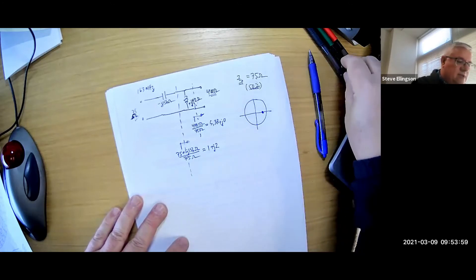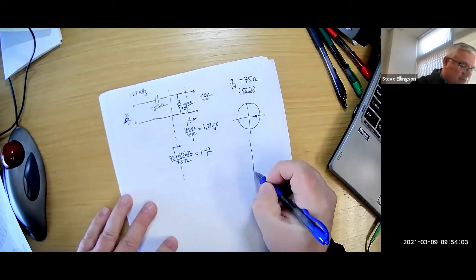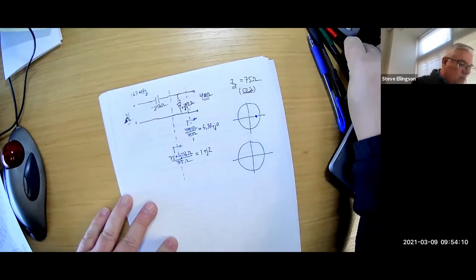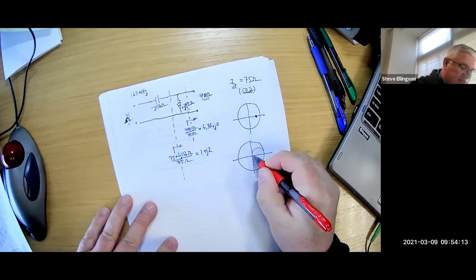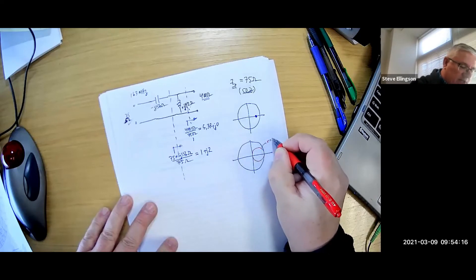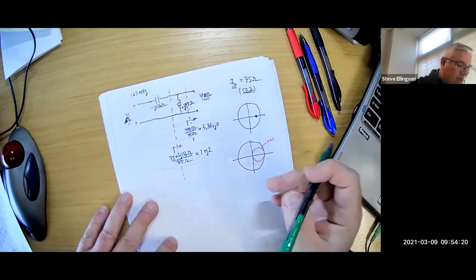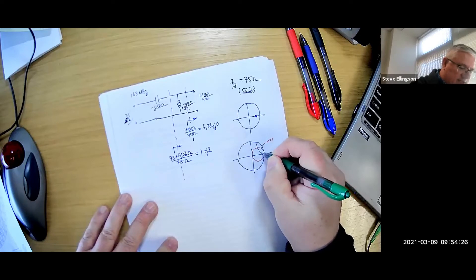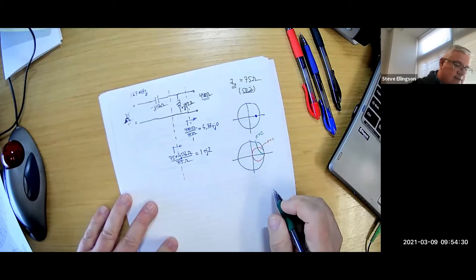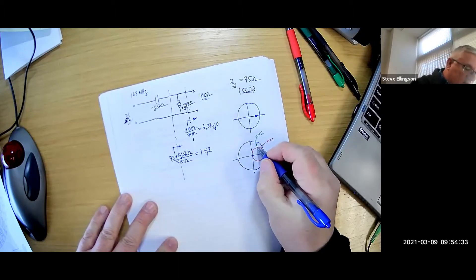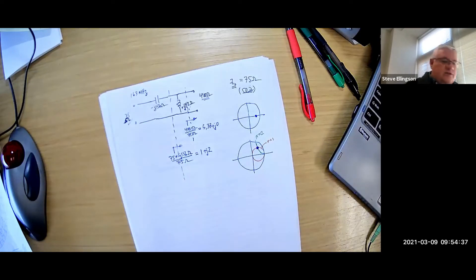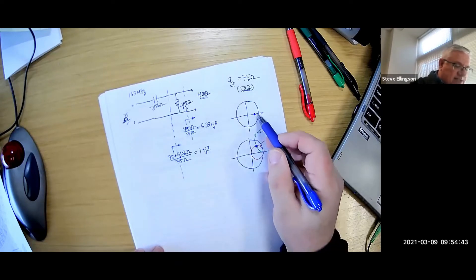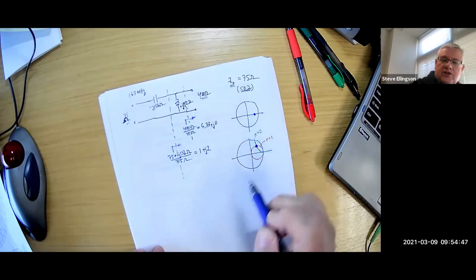We get that the normalized impedance looking to the right here is one plus j2. One plus j2, where is that point? Well again, let's test our understanding of how the geometry works here. Here's the unit circle. We know that the r equals one curve is this circle right here, that's r equals one, so must be somewhere on this curve. And we know the x equal two curve, here's x equals one, so x equals two is going to be something like this. So this impedance falls right about there.